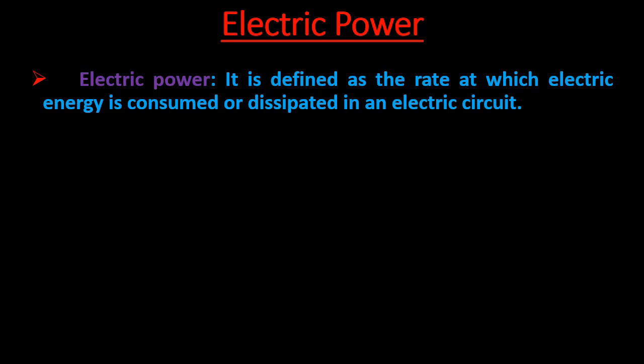When we use any electrical appliance, most of the electric energy is consumed by it, but a small amount of energy is wasted and given to the surrounding in the form of heat. This is because when electric current flows through a conductor, the resistance of the conductor opposes the flow of current, and as a result the conductor or wire gets heated up.